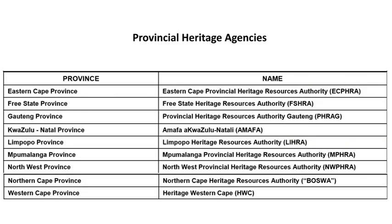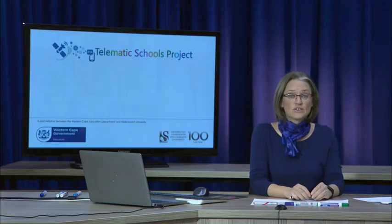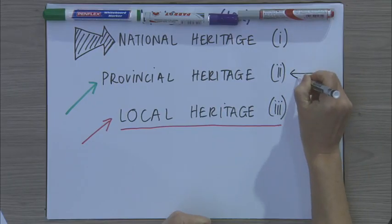There are nine provincial heritage agencies for South Africa's nine provinces. These include the Provincial Heritage Resources Authority in the Eastern Cape, the Heritage Resources Authority in the Free State, the Provincial Heritage Resources Authority for Gauteng, Amafa for KwaZulu-Natal, the Limpopo Heritage Resources Authority, the Mpumalanga Provincial Heritage Resources Authority, as well as agencies for North West, Northern Cape, and Heritage Western Cape.